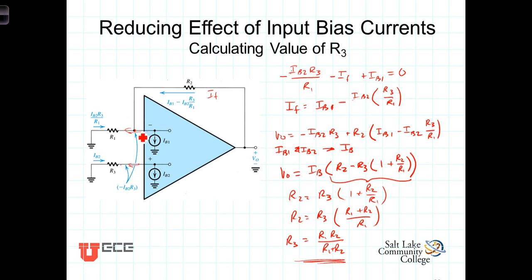we need to make the resistance that each of these sources see be the same. So the take-home message is, adding R3 with a value equal to the parallel combination of R1 and R2 will minimize the effects of the input bias currents at the output.